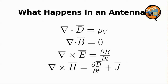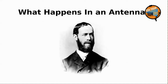Maxwell's equations, shown here for entertainment purposes only, tell us that it should be possible to create an electromagnetic wave that will propagate through space. They don't give us any information on how to create that wave. So from the time Maxwell published these equations, it took 16 years before Heinrich Hertz figured out a way to send and receive those waves.